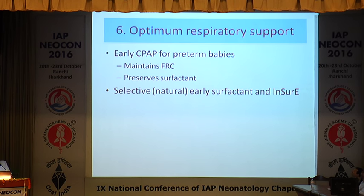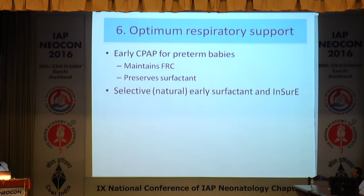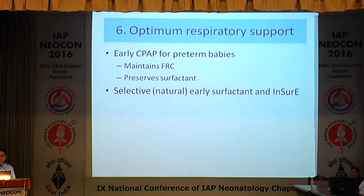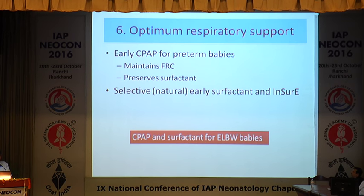In optimizing respiratory support, early CPAP for the preterm baby needs to be emphasized. Early NIPPV may be started to maintain the FRC of the baby, and it helps to preserve surfactant as well, because secondary atelectasis leads to a lot of loss of surfactant. So by giving early CPAP, we tend to preserve the surfactant which is already made antenatally. Selective early surfactant use followed by extubation and giving the baby CPAP is also a very well-established mechanism of providing respiratory support. CPAP and surfactant should be used quite readily for all ELBW babies in this golden hour.